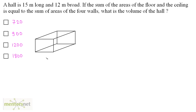This is our hall. We have the breadth, the length and the height. We have been given that the sum of the areas of the floor and the ceiling is equal to the sum of areas of the other 4 walls.